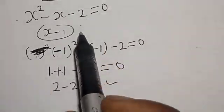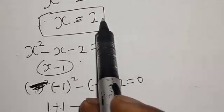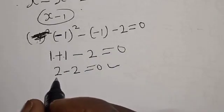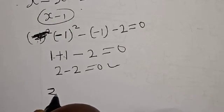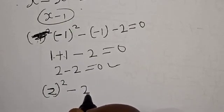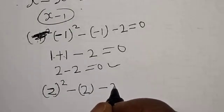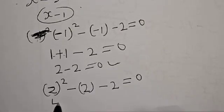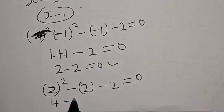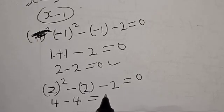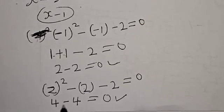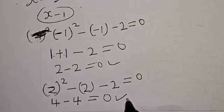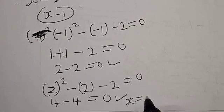Let's check at x equals 2. We have 2 squared minus 2 minus 2 must equal zero. Now 2 squared is 4, and 4 minus 2 minus 2 equals zero. We satisfy the given equation at x equals 2.